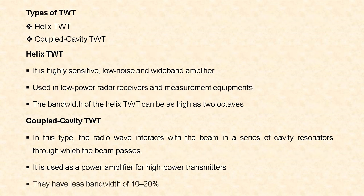There are two main types of traveling wave tube: helix traveling wave tube and coupled cavity traveling wave tube. In the helix traveling wave tube, the radio waves interact with the electron beam while traveling down a wire helix which surrounds the beam. It is a highly sensitive, low noise and wide band amplifier, used in low power radar receivers and measurement equipment. These helix traveling wave tubes have bandwidth as high as two octaves. In the coupled cavity traveling wave tube, the radio wave interacts with the beam in a series of cavity resonators through which the beam passes. These coupled cavity traveling wave tubes are used as power amplifiers for high power transmitters, but their bandwidth is very low — only 10 to 20%.